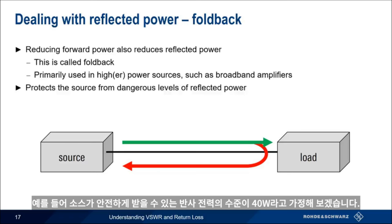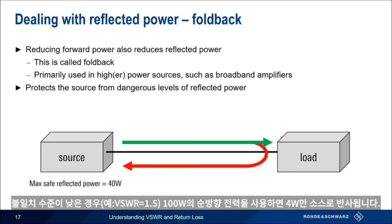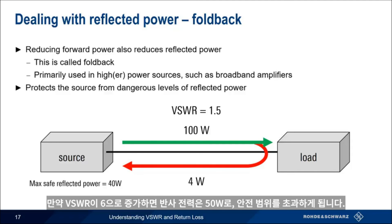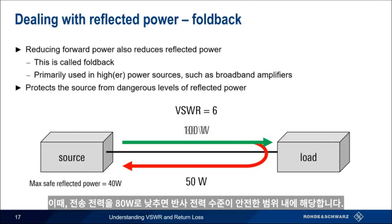For example, let's assume that our source has a maximum safe reflected power of 40 watts. If the level of mismatch is low — say VSWR equals 1.5 — then with 100 watts of forward power, only 4 watts will be reflected back to our source. If VSWR were to increase to 6, the level of reflected power of 50 watts would exceed this safe limit. By lowering transmit power down to 80 watts, the level of reflected power now falls again within the safe limit.